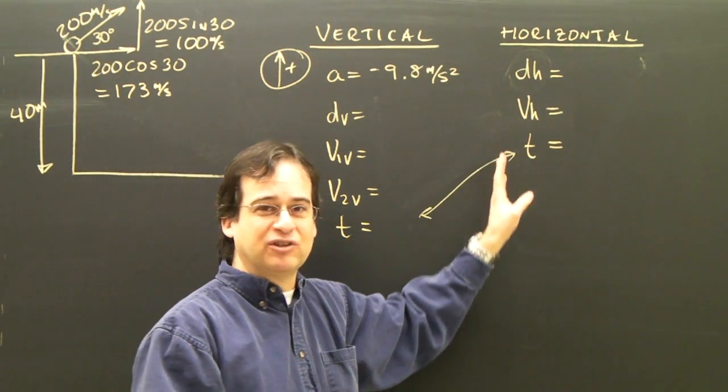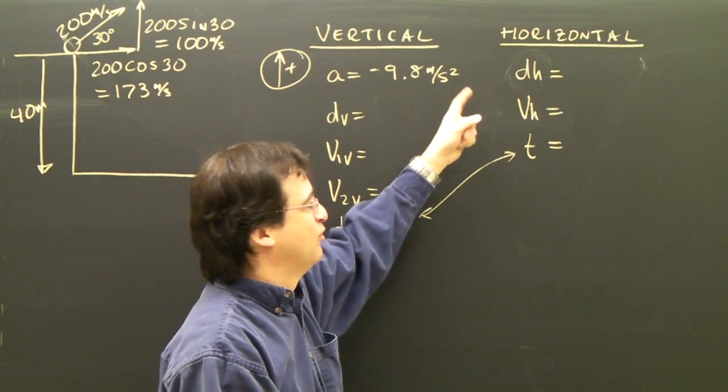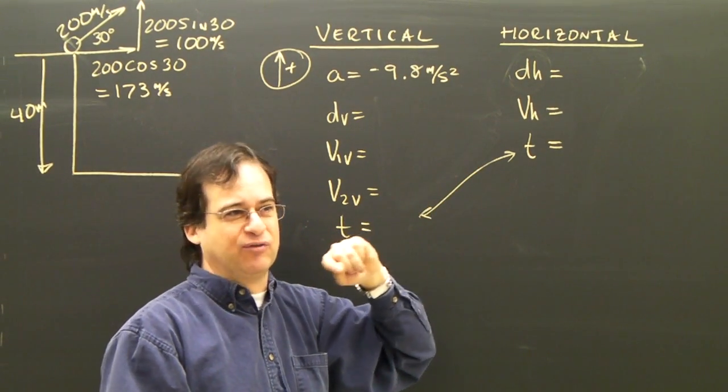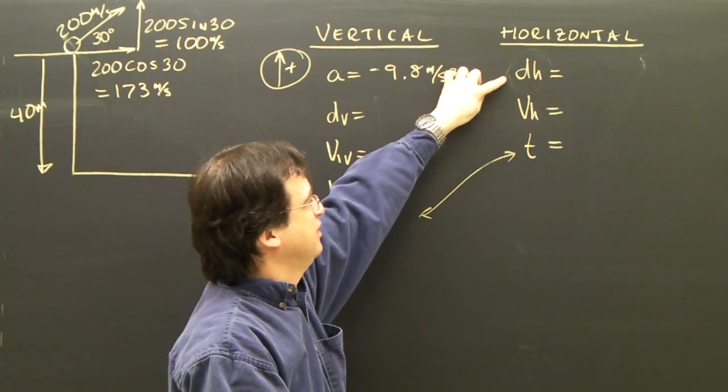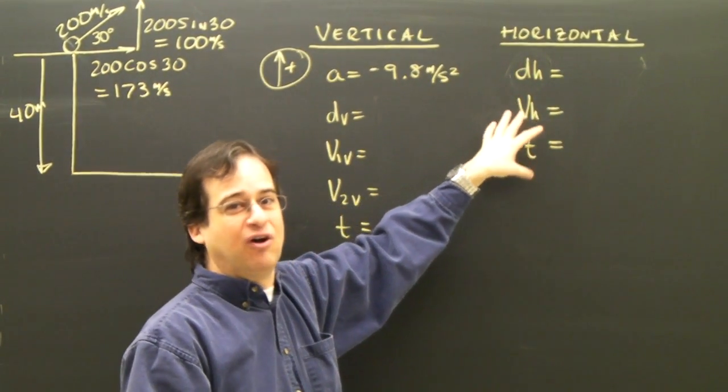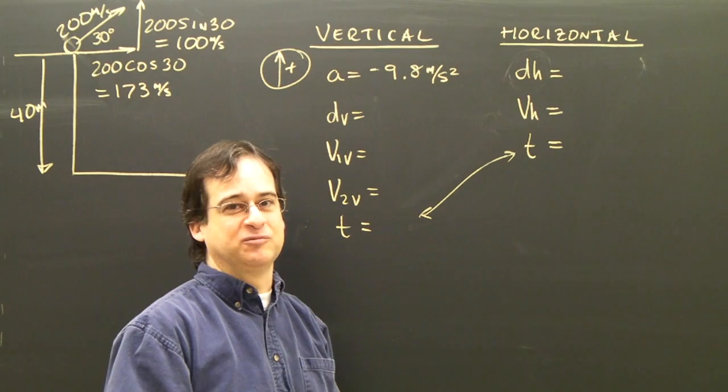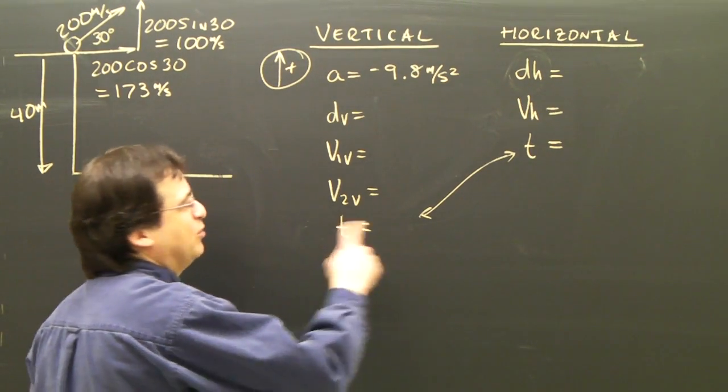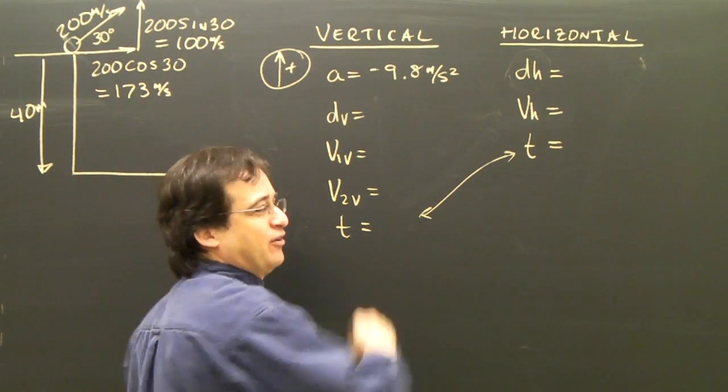In this column, I've got my horizontal information, much easier. I've only got one equation, V equals D over T, and we arrange that to D is equal to V times T. So I need two pieces in this column in order to solve for anything. The only thing that can go from one column to the other is time.